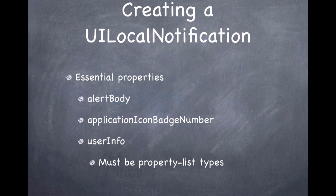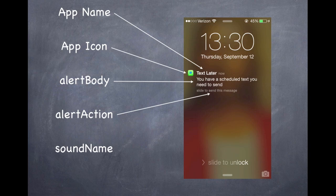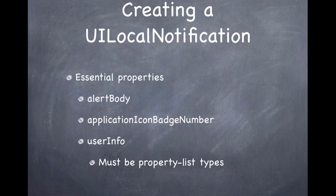UILocalNotifications have a total of 11 properties. I consider three to be essential for almost any UILocalNotification to be effective. First, the alert body — that's the text shown to the user, like 'You have a scheduled text you need to send' in my app. Second, the application icon badge number — the little red circle with a number on your app icon that tells users something is waiting and they should take action.